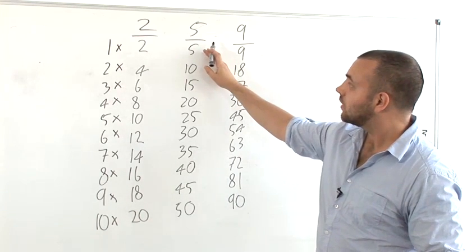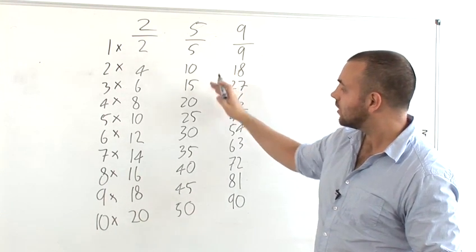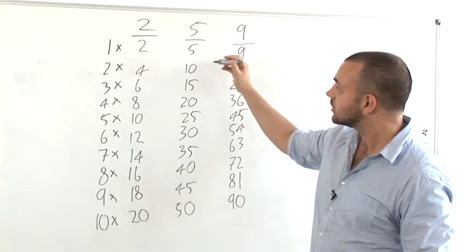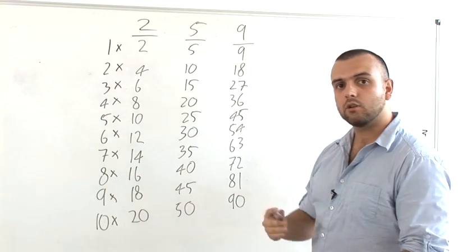For the five times table, you can teach that every number in the five times table will end with either a zero or a five as they go up in fives.